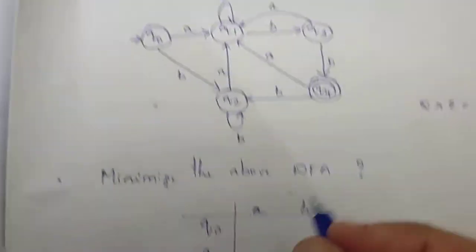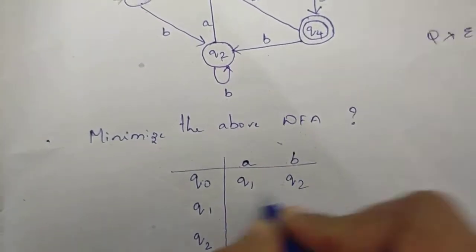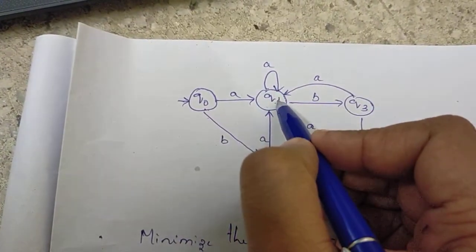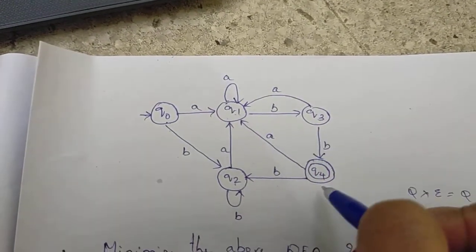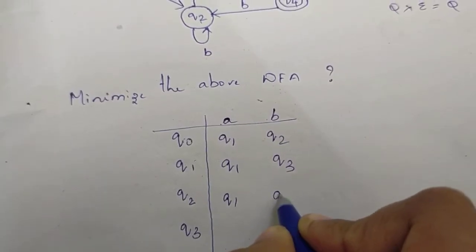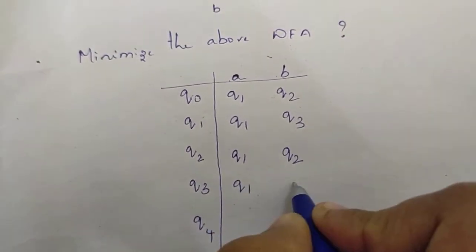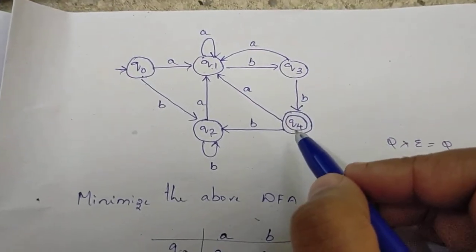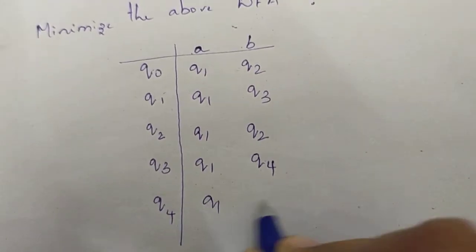The transition table is as follows: Q0 on A goes to Q1, Q0 on B goes to Q2. Q1 on A goes to Q1, Q1 on B goes to Q3. Q2 on A goes to Q1, Q2 on B goes to Q2. Q3 on A goes to Q1, Q3 on B goes to Q4. Q4 on A goes to Q1, Q4 on B goes to Q2. Q0 is the starting state and Q4 is the final state.